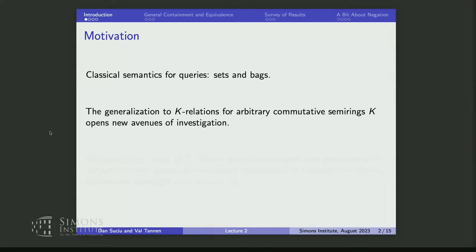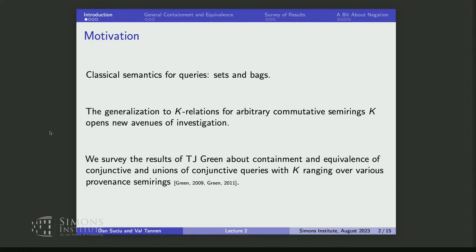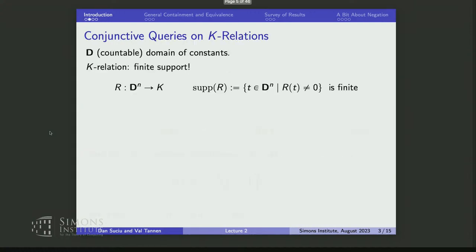Now that we have a generalization to K-relations, being dutiful mathematicians, we have to see what that means for general K. This led to a very beautiful paper by T.J. Green — I'm being immodest, but at least I'm praising T.J., who was my student — about containment and equivalence of conjunctive queries and unions of conjunctive queries, where K ranges over various provenance semantics. A journal paper with full details appeared in 2011.